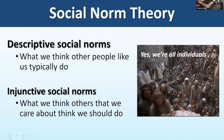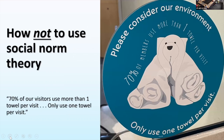A great example of how not to use descriptive norms: 'Please consider our environment—70% of our visitors use more than one towel per visit. Only use one towel per visit.' That's exactly the wrong way to use descriptive norms. You want to say: 'Join others who are hanging their towels up and reusing them.' Very simple, but this is actually very predictive of human behavior.